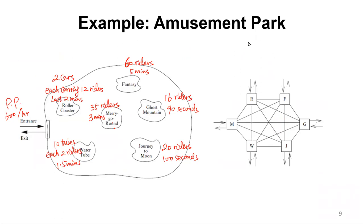Now let's look at the amusement park example. Customers enter from outside the gate with equal probability to enter any attraction. From each attraction — roller coaster (R), fantasy (F), merry-go-round (M), water tube (W), journey to the moon (J), and ghost mountain (G) — after finishing, the visitor has equal probability to visit all other attractions or leave the network.